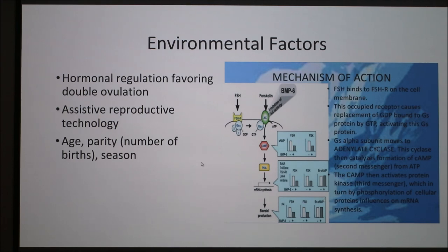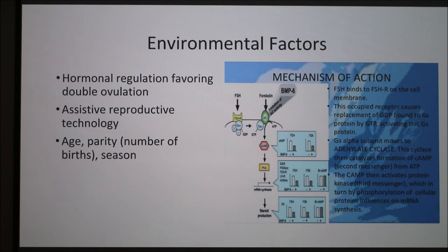Environmental factors include hormonal regulation favoring double ovulation. This can be caused by administering FSH, which is follicle-stimulating hormone. It stimulates the ovaries to release more than one egg at a time, which increases the chances that a cow will give birth to twins or that two embryos will attach to the uterine lining. Assistive reproductive technology encompasses hormones such as FSH, as well as anything that increases the number of ovulations the cow has had.